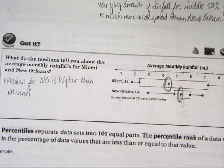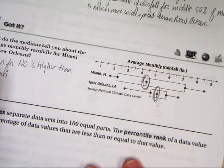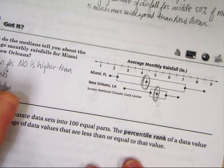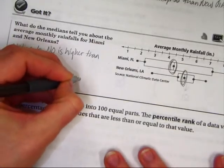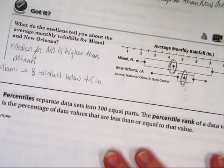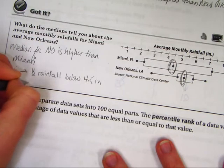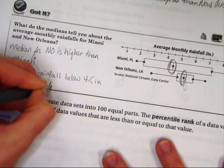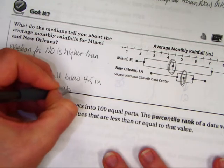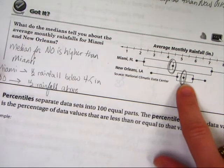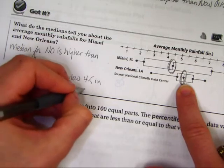So in Miami, the rainfall is below, the half of the rainfall is below, the half of the rainfall, let's, can we write this down, Miami? Half of the rainfall is below 4.5 inches. Whereas in New Orleans, half of the rainfall is above, where's that at? About 5.3 inches. So you can see that in New Orleans, they average, at least in their medians, a higher rainfall.